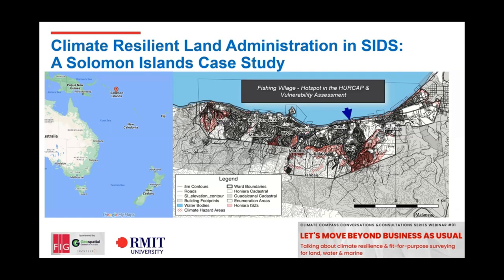Honiara is very exposed. Solomon Islands is one of the most exposed countries in the world. Honiara in particular faces cyclone threats, flooding, landslides, and some drought in certain areas — significant natural challenges. It also has significant urbanisation challenges, with settlements growing and in some cases spilling over the township boundary into customary land, and that will certainly continue. The township and non-customary land areas are quite full now, so there are significant challenges in the informal settlements.